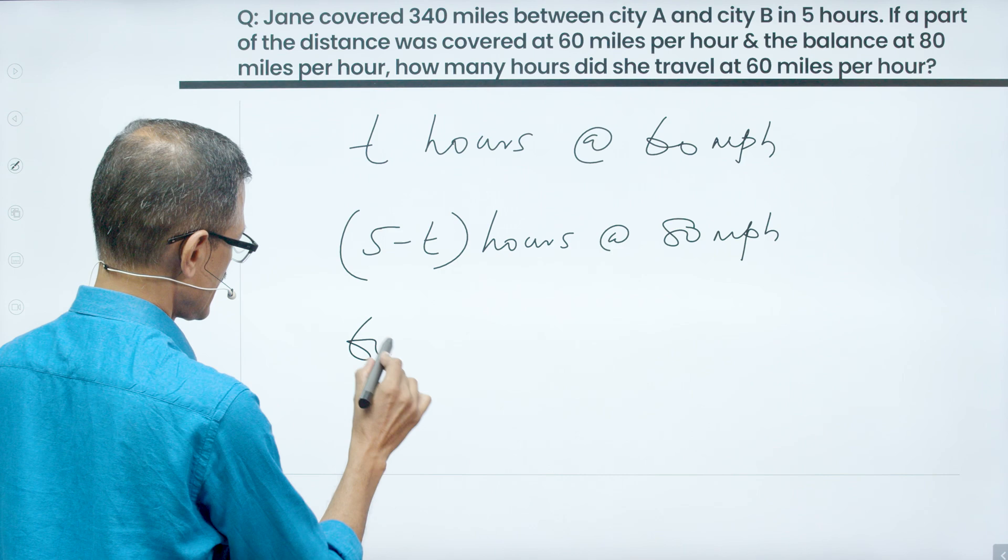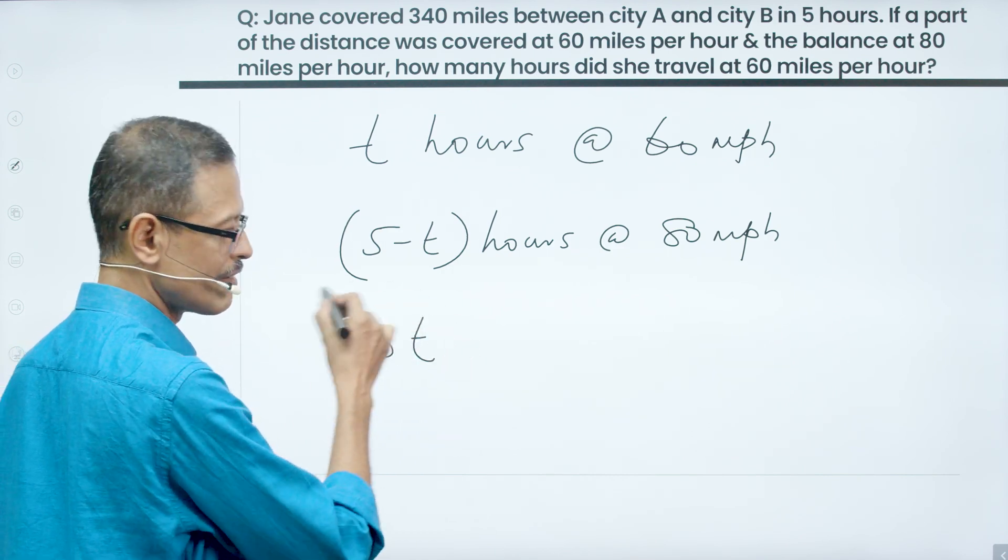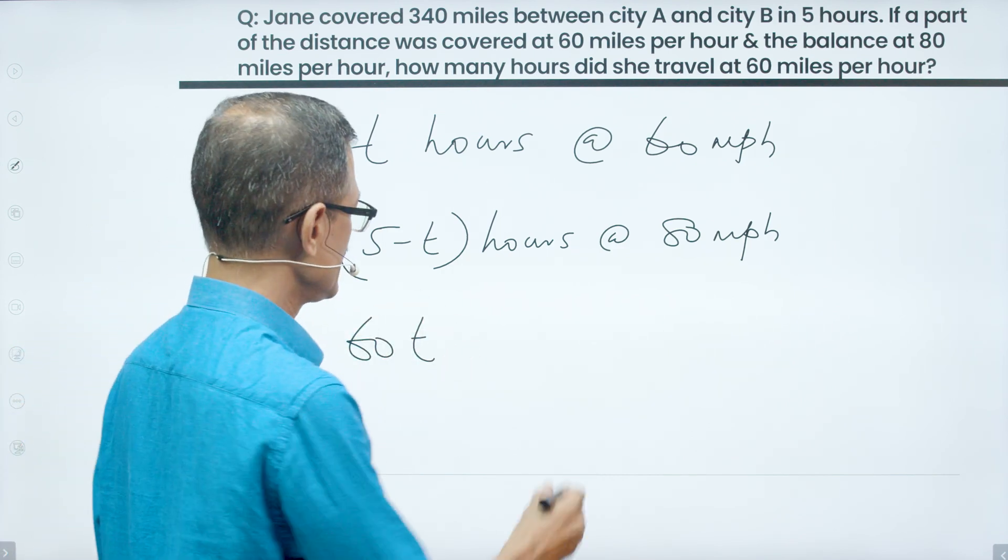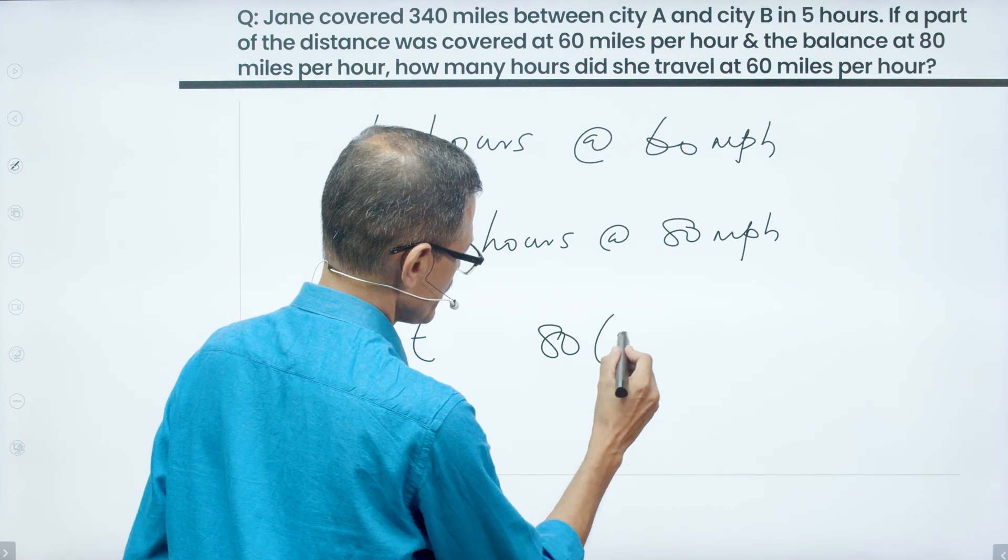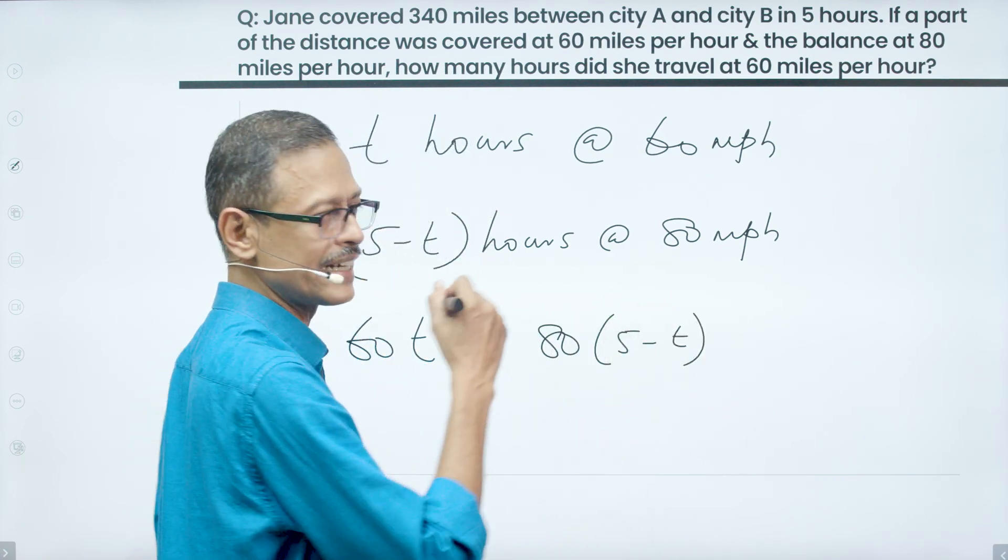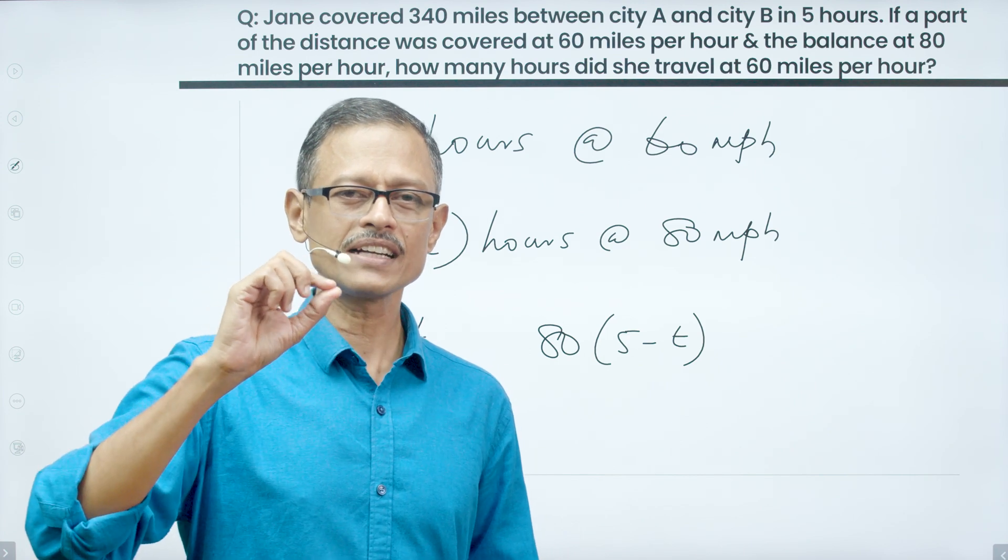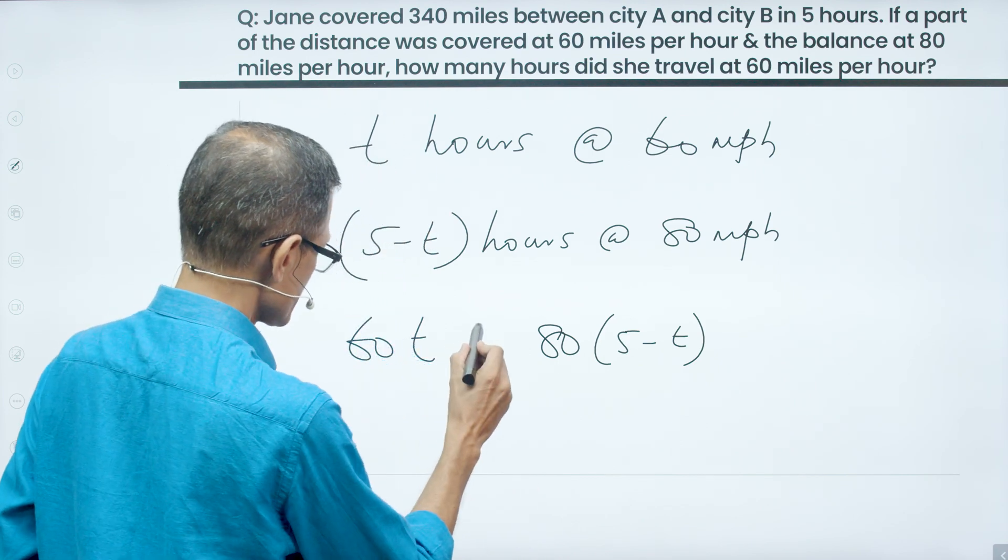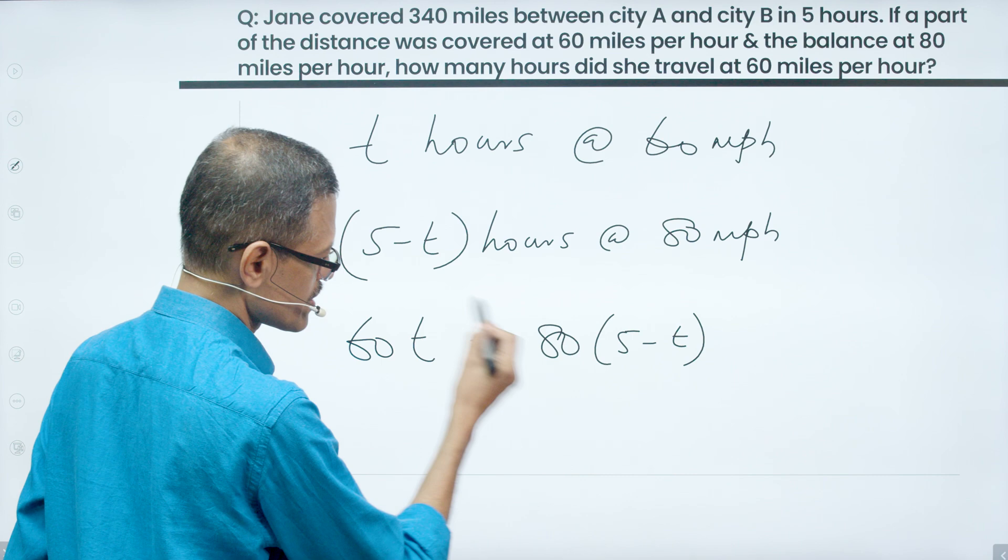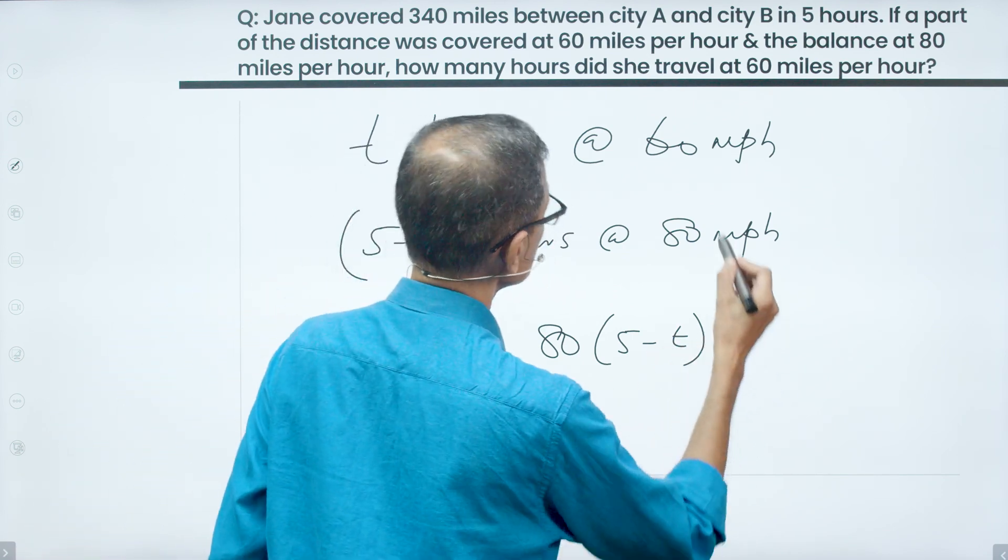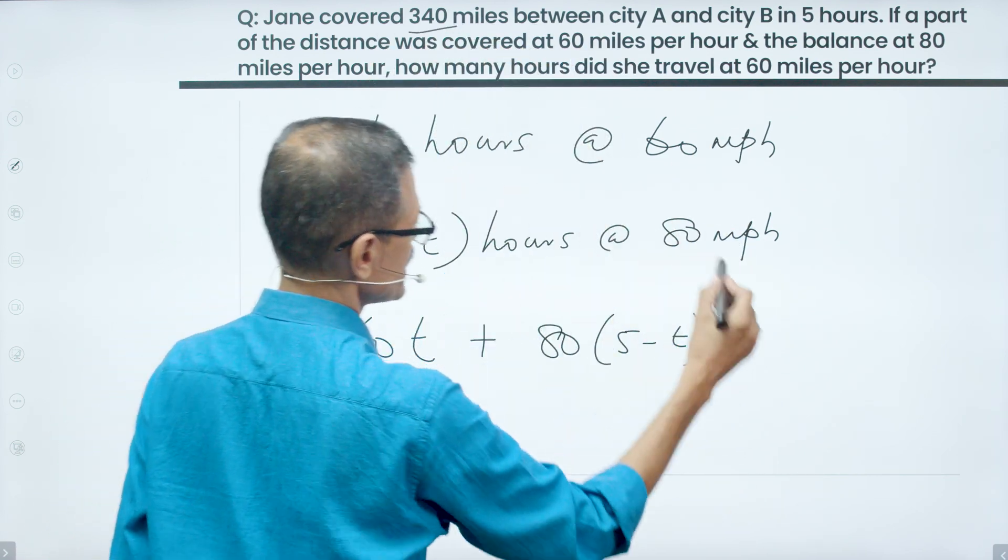So 60 miles per hour, T hours, this is the distance covered at 60 miles per hour. 80 miles per hour and 5 minus T hours traveled at 80 miles per hour. So 80 times 5 minus T is the distance traveled at 80 miles per hour. Distance traveled at 60 miles per hour plus distance traveled at 80 miles per hour is the total distance which is equal to 340 miles.